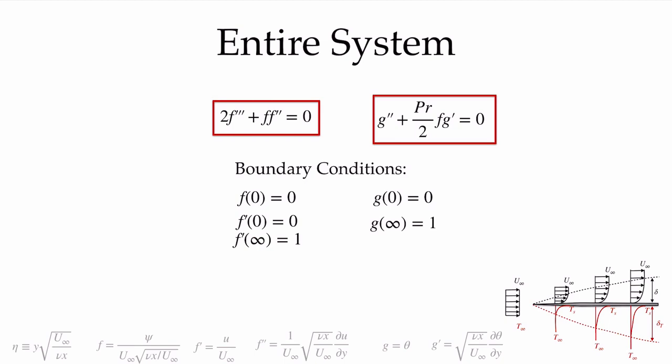Putting it all together, we have turned our set of four coupled partial differential equations — conservation of mass, conservation of x-momentum, conservation of y-momentum, and conservation of energy — into two ordinary differential equations: a third-order ODE (2f''' + ff'' = 0) and a second-order ODE (g'' + Pr/2 · f · g' = 0), with five boundary conditions necessary to solve them. In the next video, we'll look at how to solve these and extract useful information from the solutions.